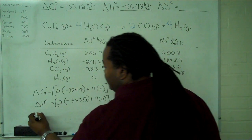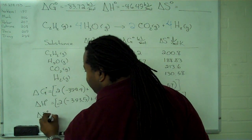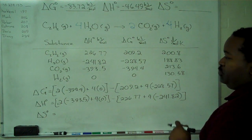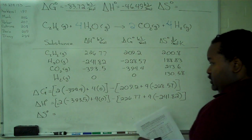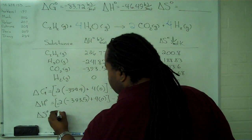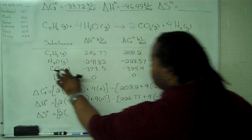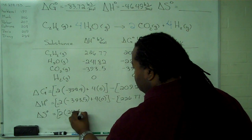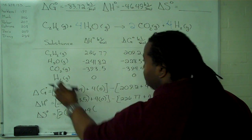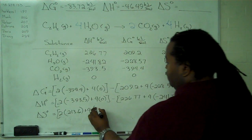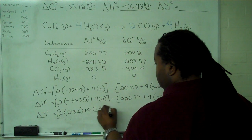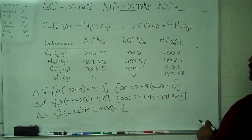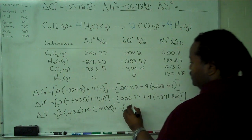And finally, at the bottom of the board, we're going to do the same thing for the entropy. So this will be two times 213.6, plus four times 130.58. Minus, for our reactants, one times 200.8,